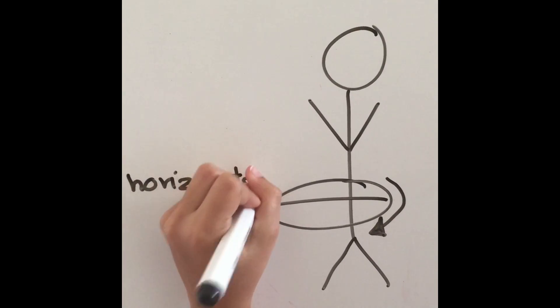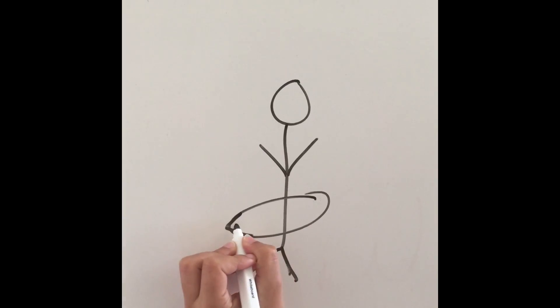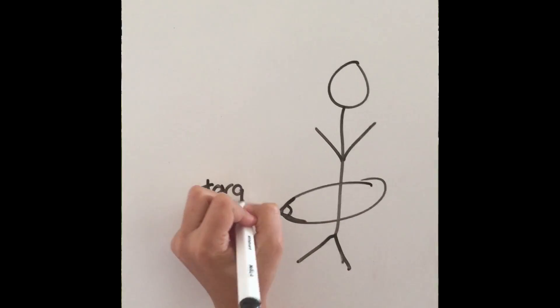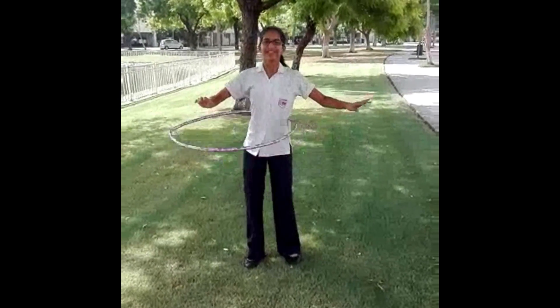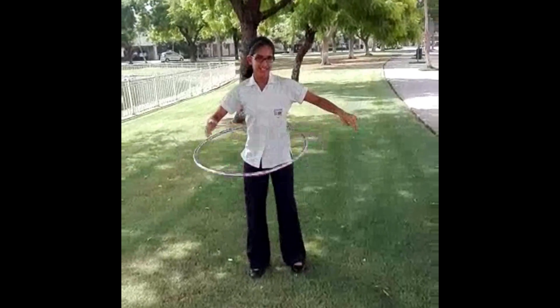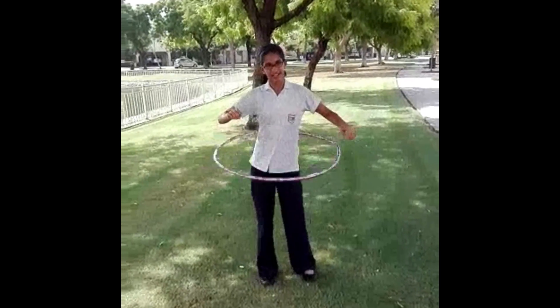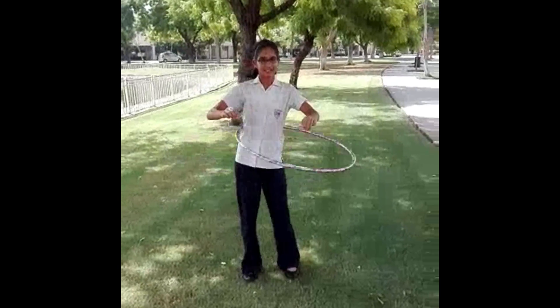To keep it going, you need to move at an angle related to the surface of the hoop. This creates torque and conserves the hoop's angular momentum. Timing is an important factor. Your hip movement has to be slightly ahead of the hoop, pushing it along.